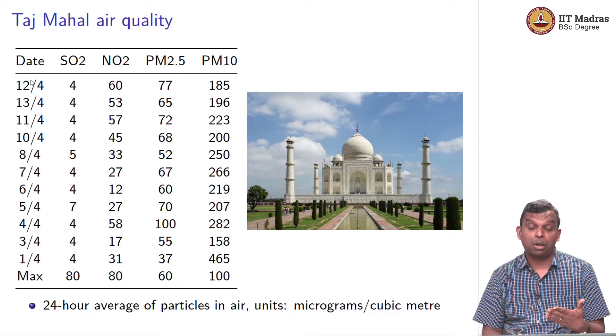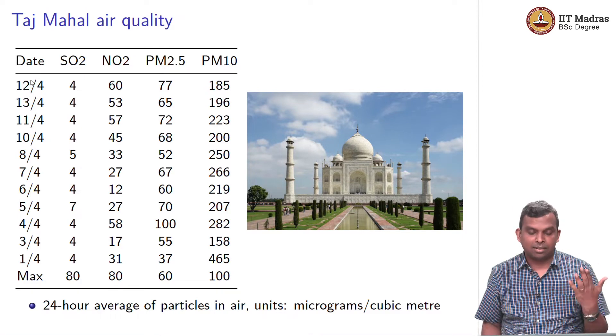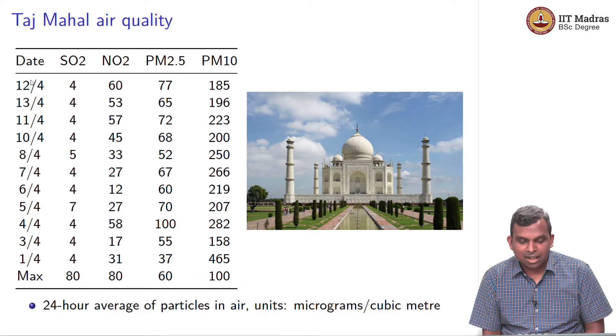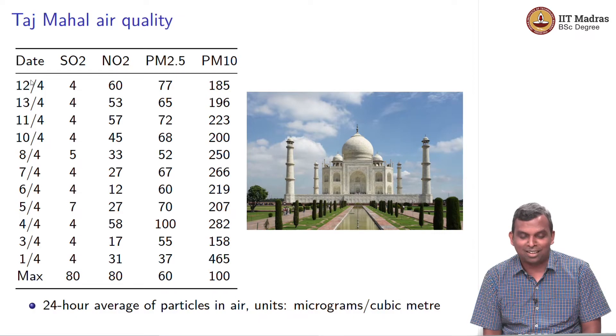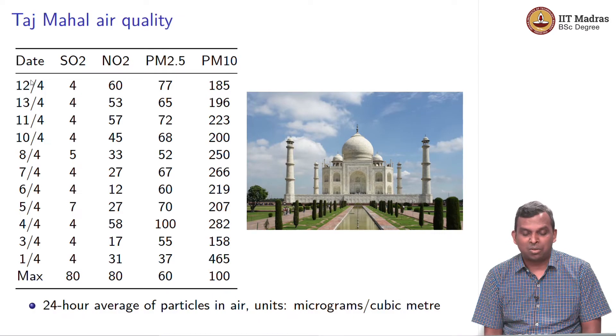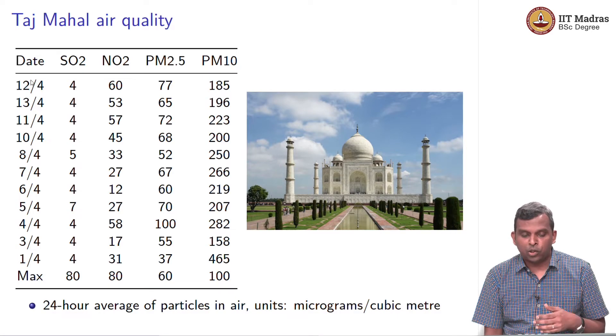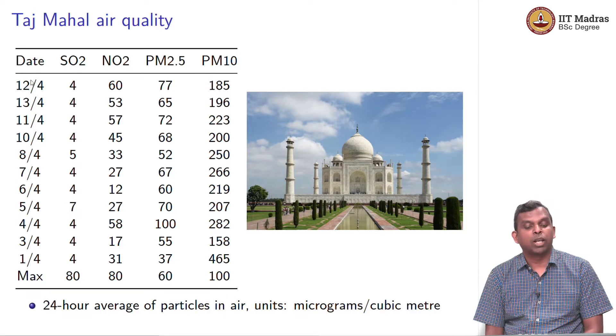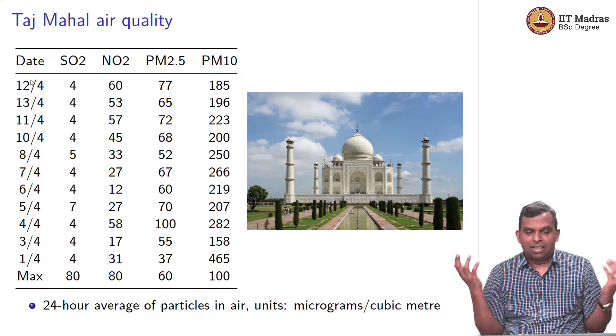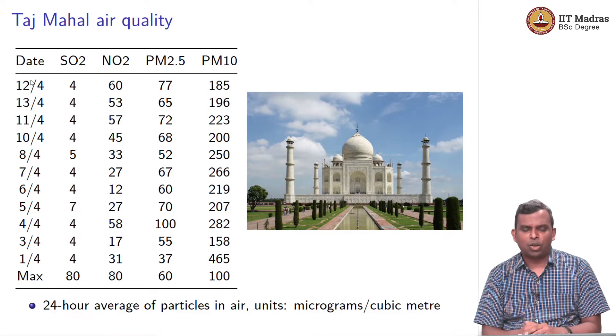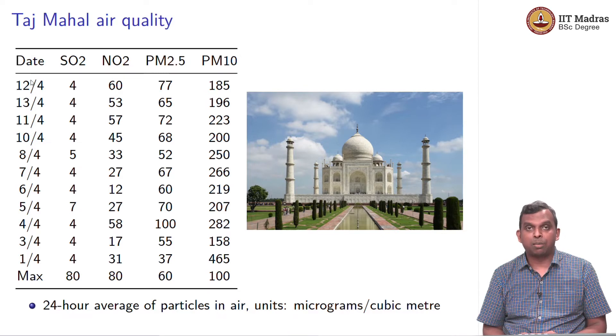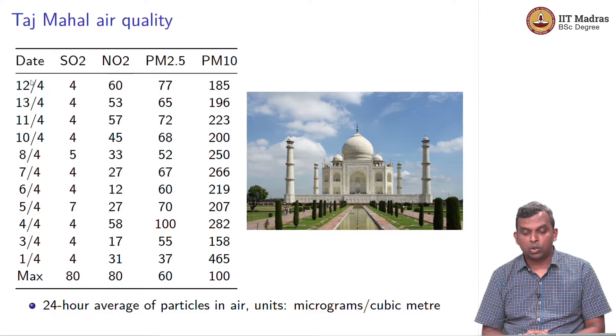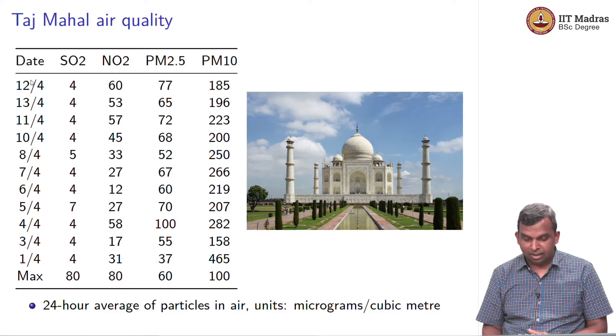The max which is the last row is basically the maximum allowable number within a 24 hour average period. 80, 80, 60, 100, these are considered good numbers. At least in India, the pollution control board, these are the standards. This is the standard, below which it is good, above which it is bad. This is the Taj Mahal we are talking about. This definitely symbolizes one thing about India, which is good to preserve. And you can see the numbers are a bit disappointing for PM10. It is all way higher than the maximum allowable limit.